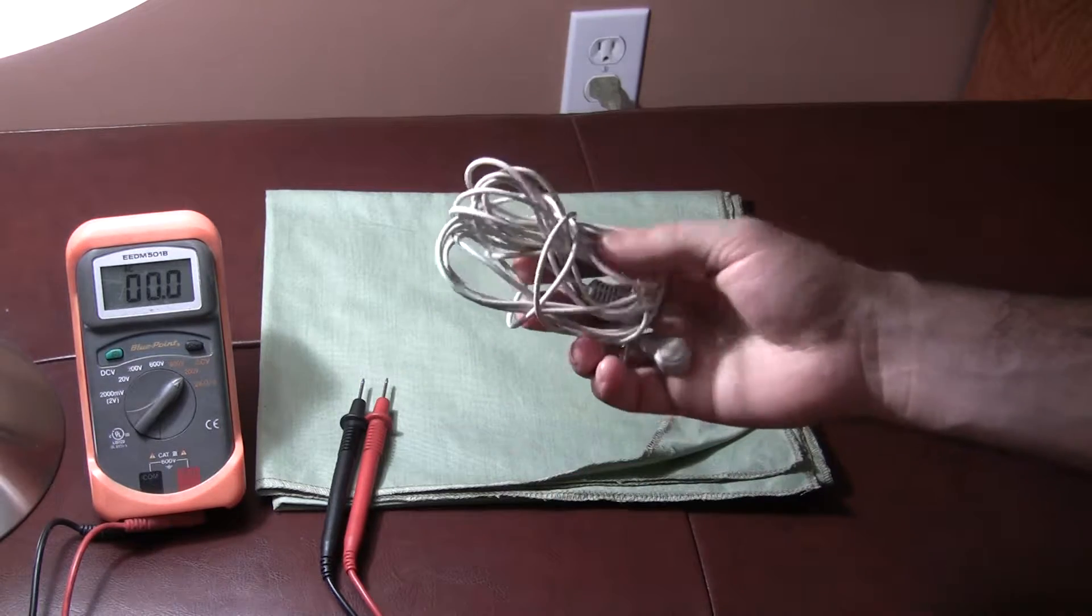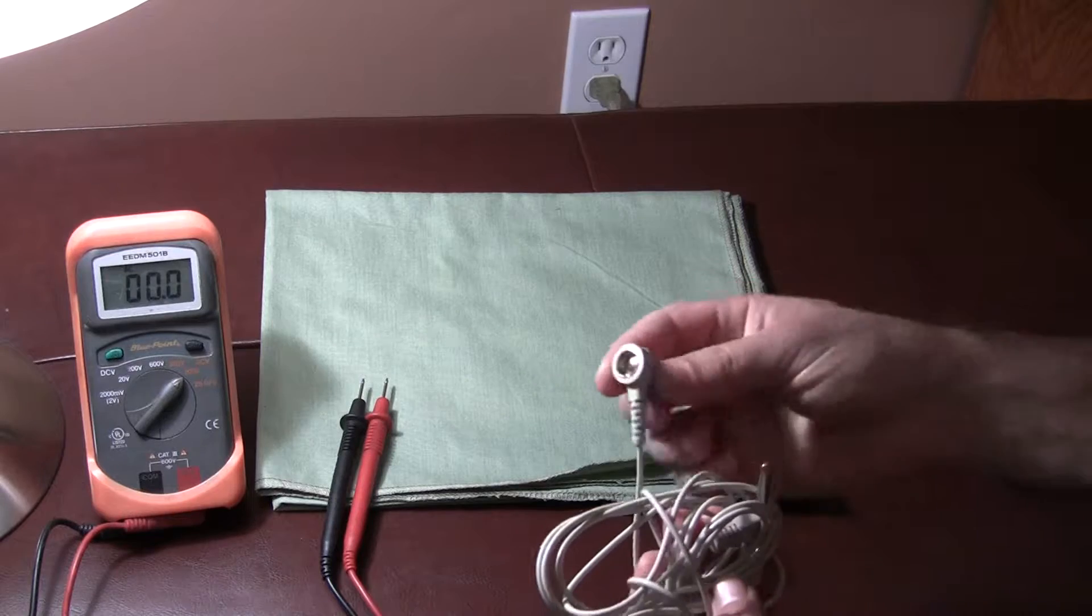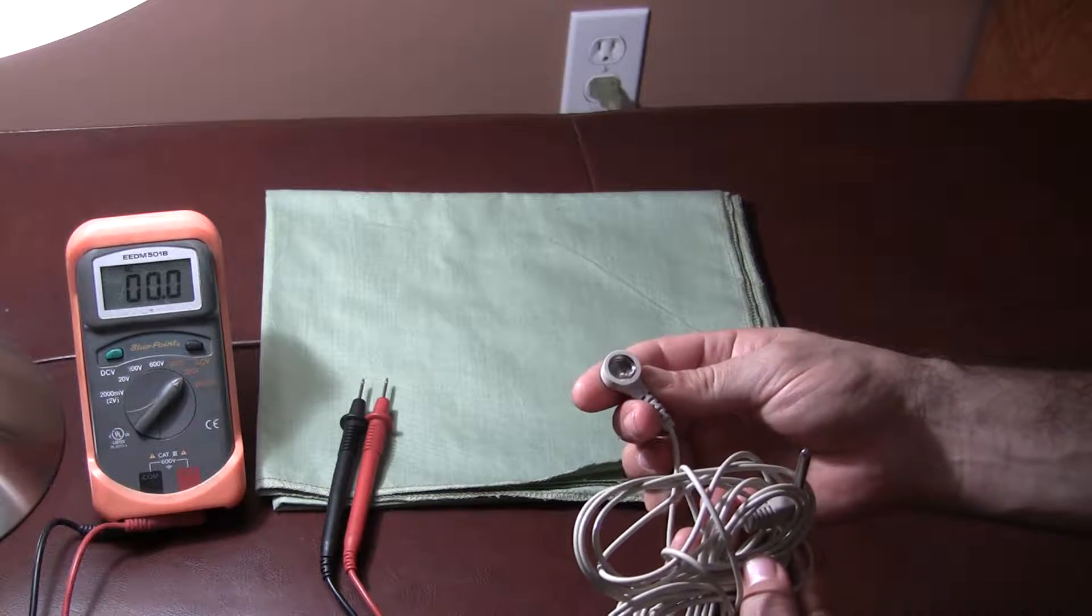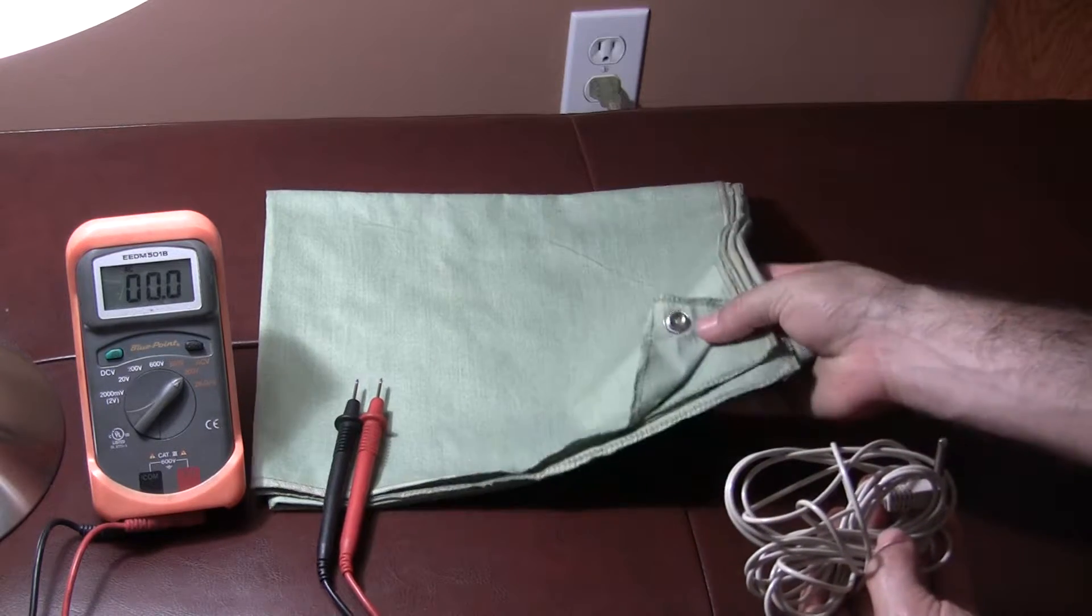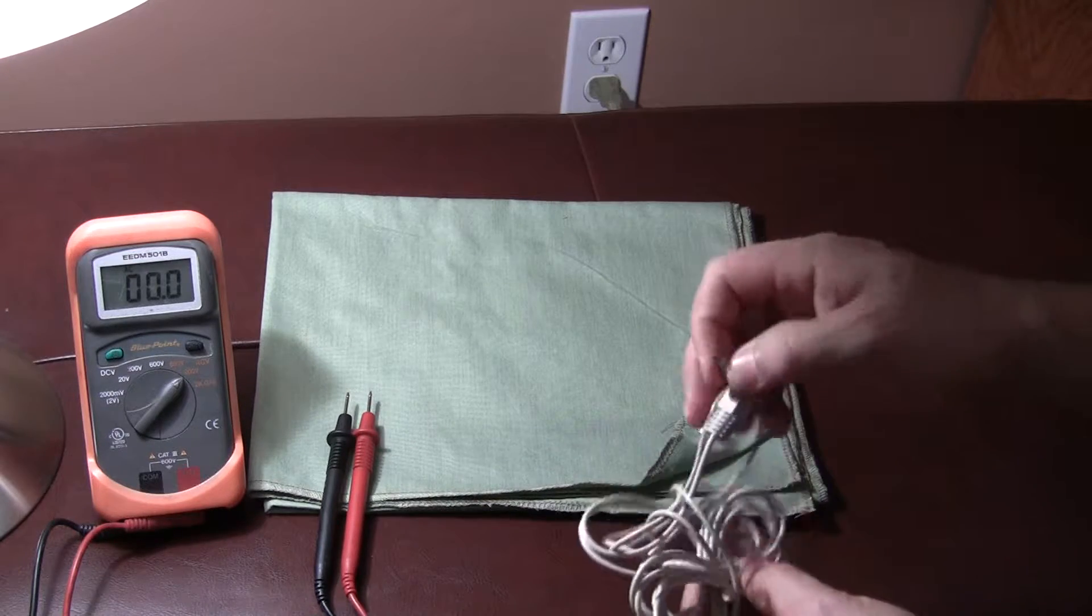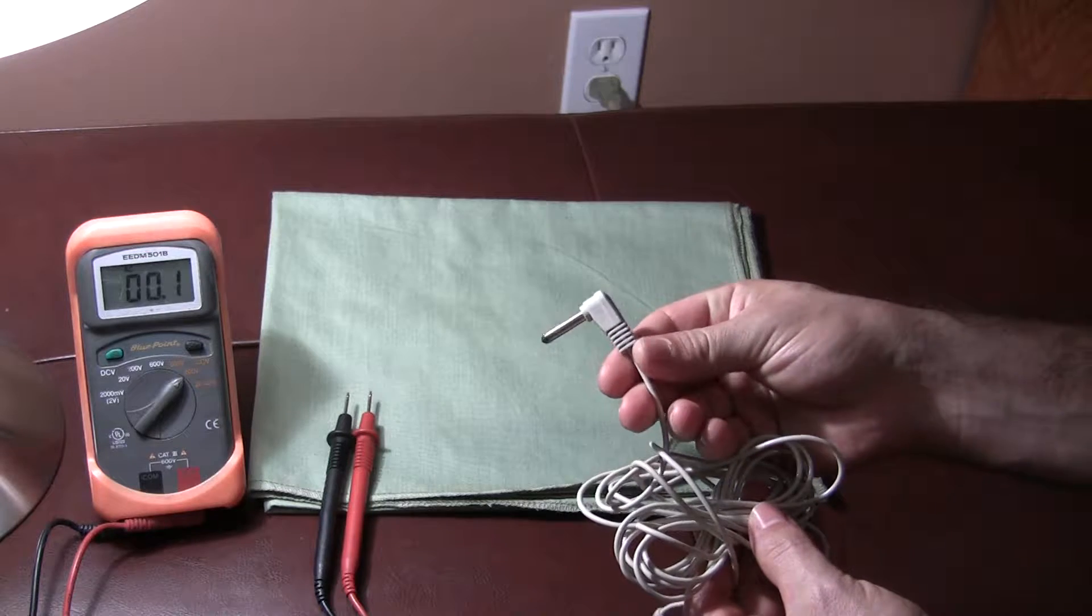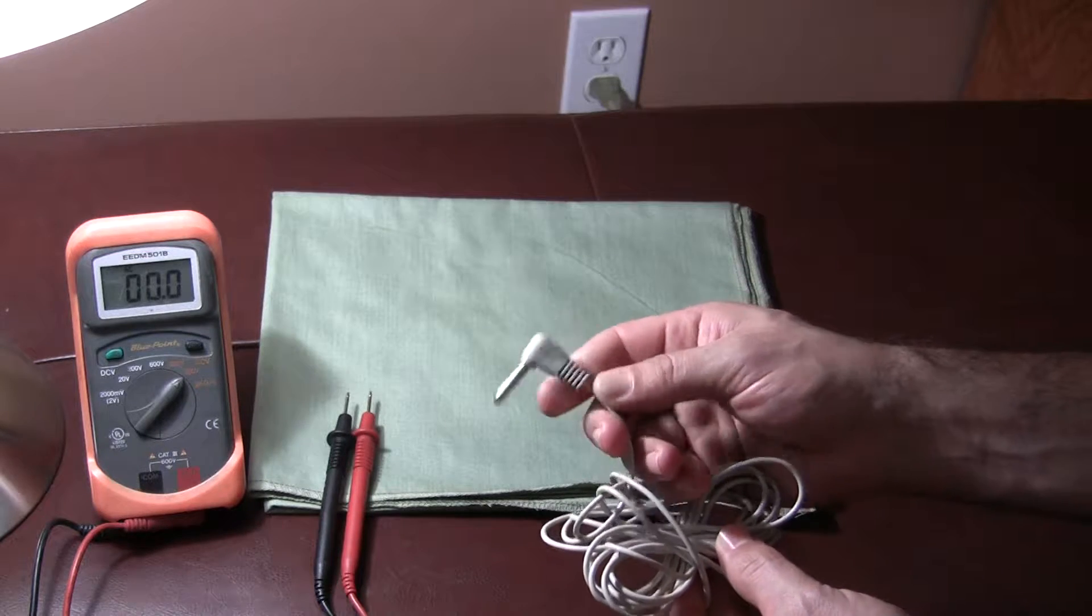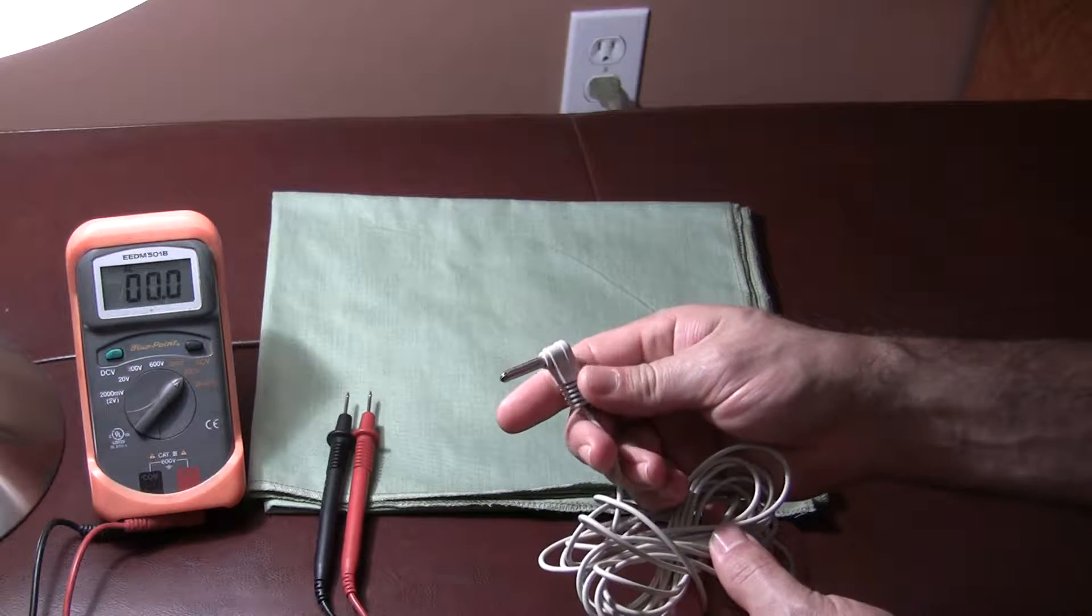It's got a grounding cord with snap-on female to male connection, which is part of the grounding sheet. Part of the grounding cord we have a built-in resistor with one megohm.